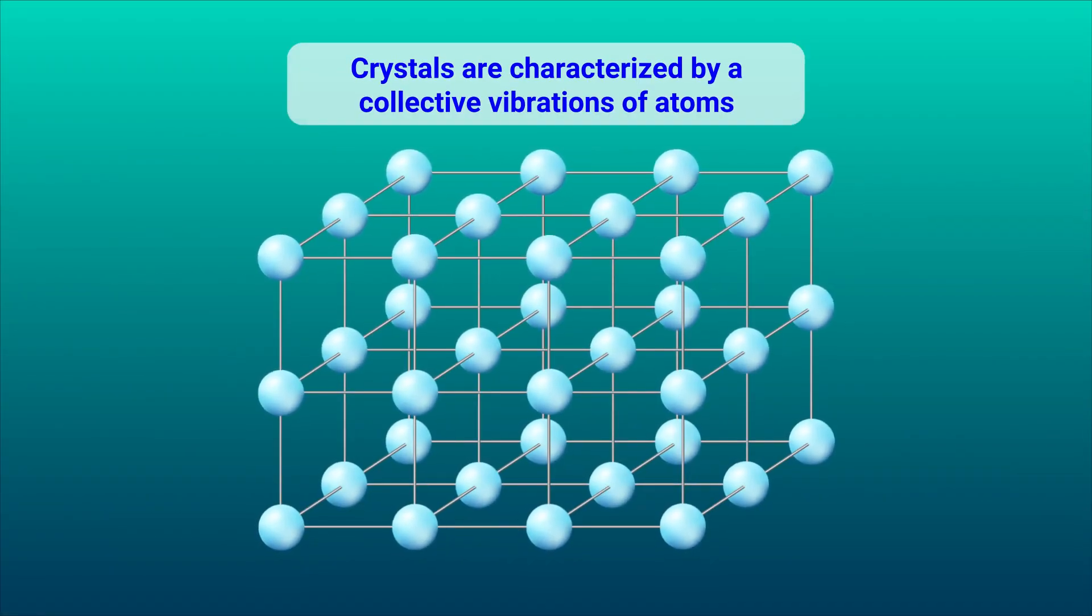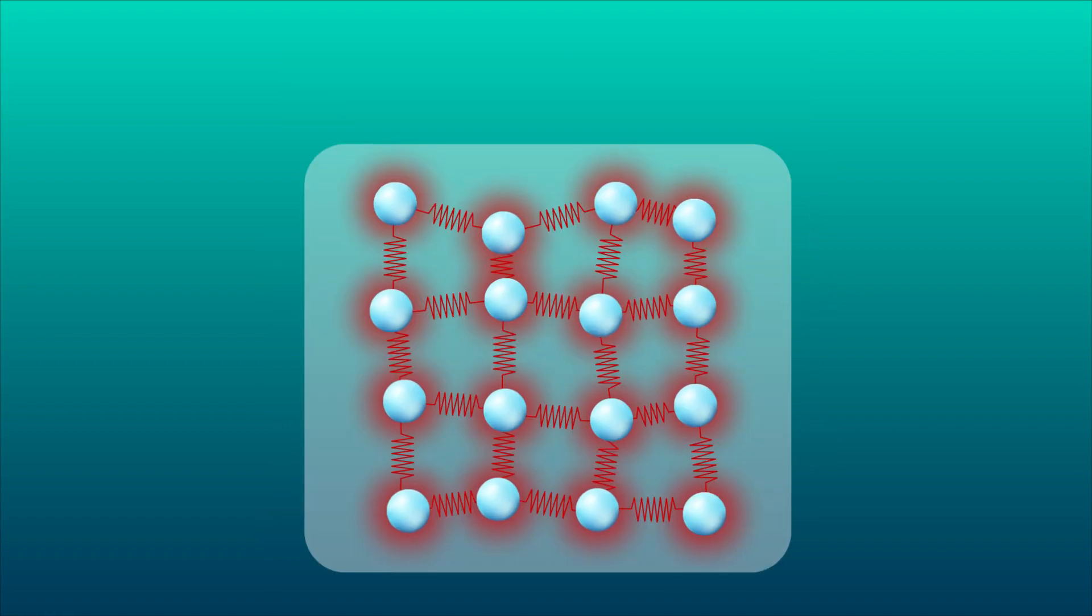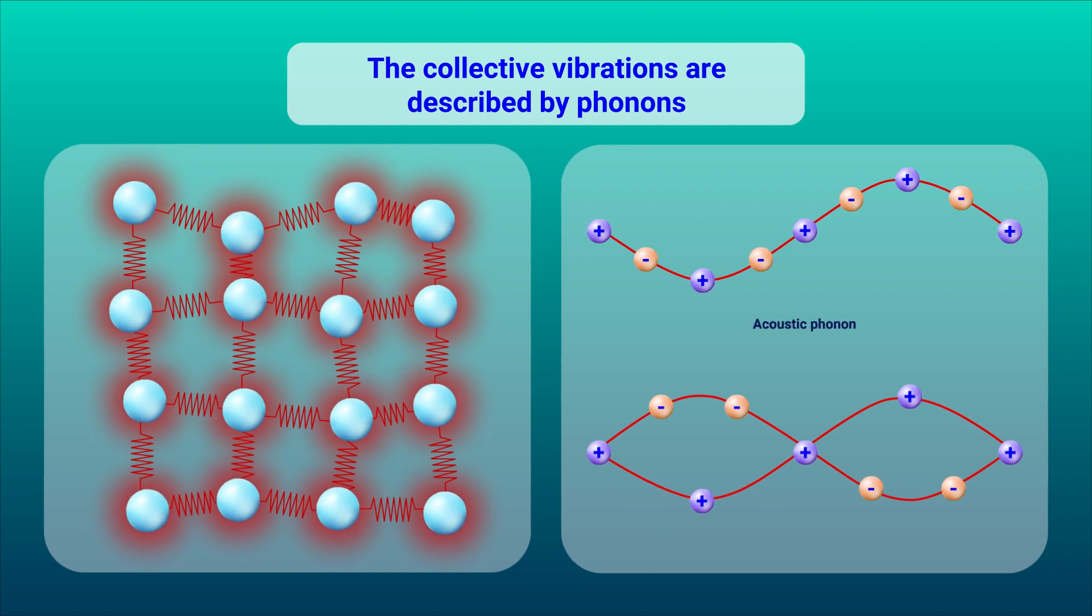Crystalline solids are often characterized by collective vibrations of atoms. In solid-state physics, these collective vibrations are described by phonons, defined as the discrete quanta of collective atomic vibrations.